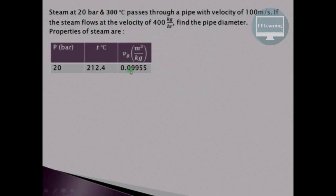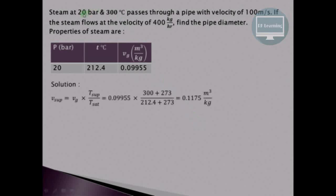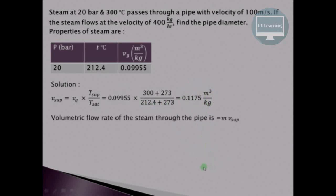The specific volume of dry saturated steam from the table is 0.109955 m³/kg. Since the steam is superheated, the specific volume of superheated steam is calculated using gas laws: V_sup = VG × (T_sup / T_sat). T_sup = 300 + 273 = 573 K, and T_sat = 212.4 + 273 = 485.4 K. This gives the specific volume of superheated steam as 0.1175 m³/kg.